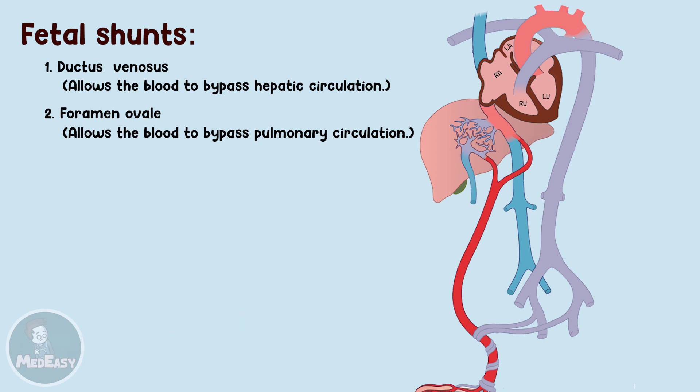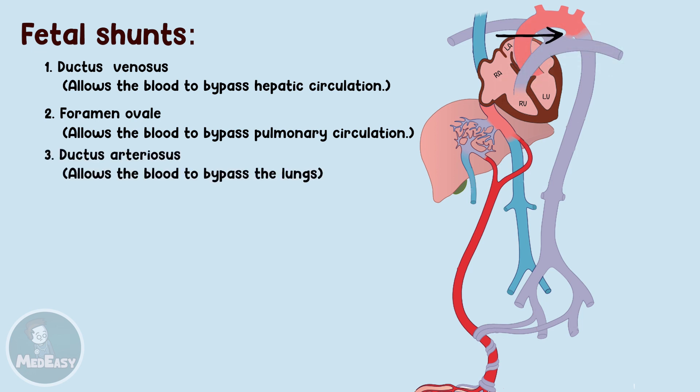After the blood has passed through the right ventricle, it will go through the main pulmonary trunk, but bypasses the lungs by entering through the third and last shunt in fetal circulation, which is the ductus arteriosus. Due to high fetal pulmonary resistance, the blood favors passing through this shunt towards the less resistant descending aorta.